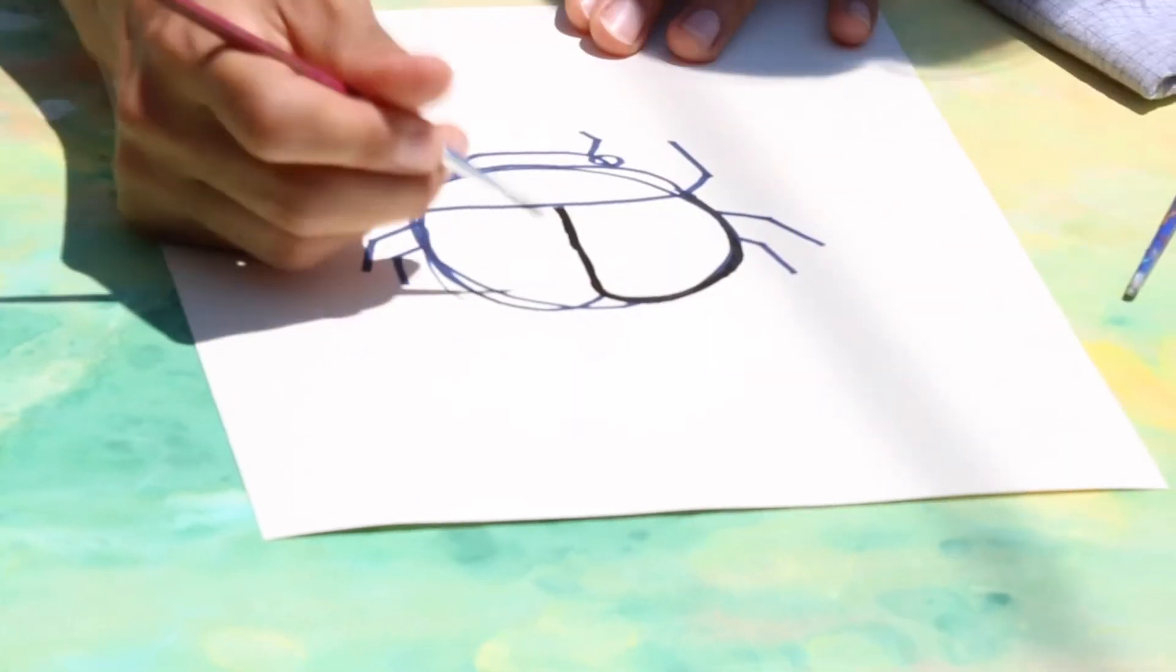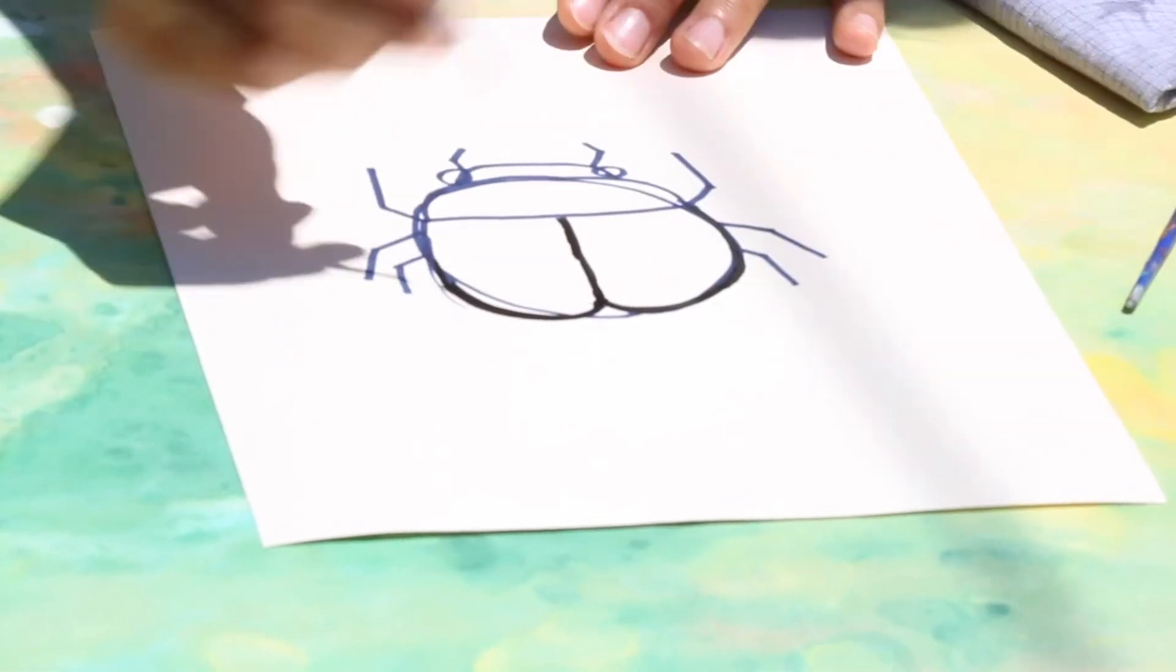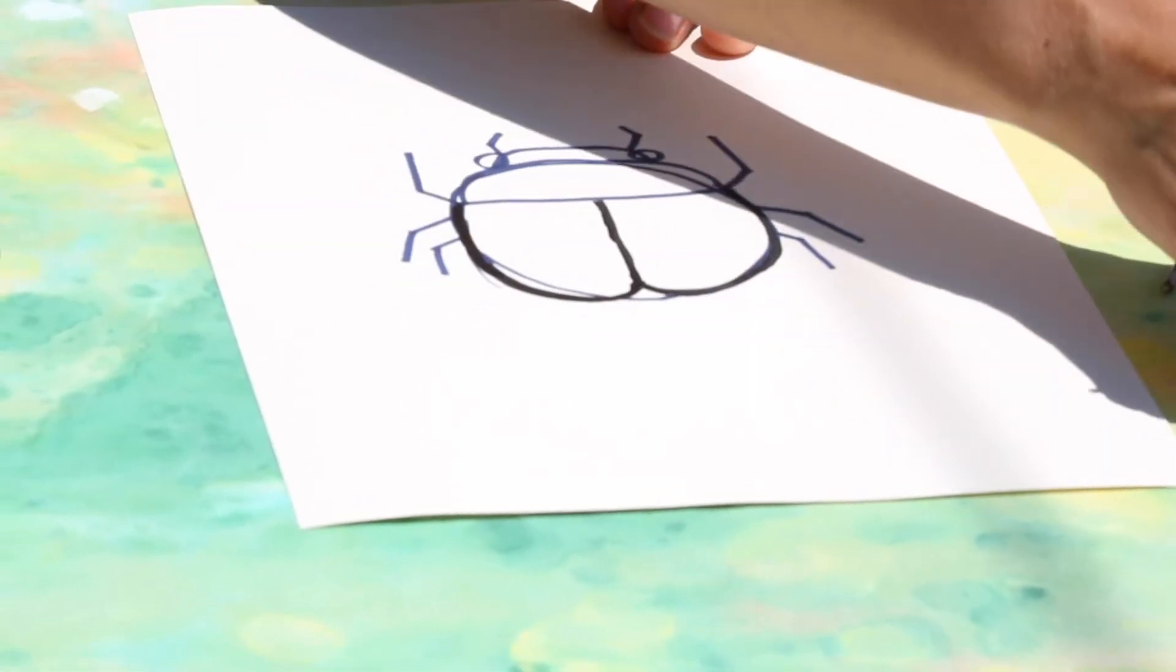I'm just going to trace all your lines. Leave the legs off right now. It's easier to paint those over the background instead of painting the background around them.